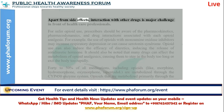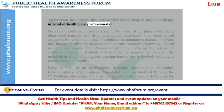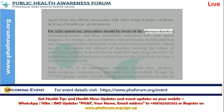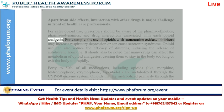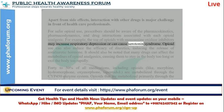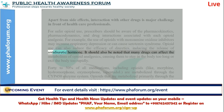Apart from side effects, interaction with other drugs is a major challenge for healthcare professionals. For safer opioid use, prescribers should be aware of the pharmacokinetics, pharmacodynamics, and drug interactions associated with each opioid analgesic. For example, the use of opioids with monoamine oxidase inhibitors may increase respiratory depression or can cause serotonin syndrome. Opioid use can also reduce the efficacy of diuretics by inducing the release of antidiuretic hormone.